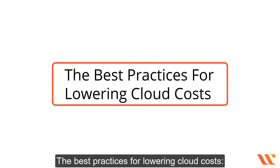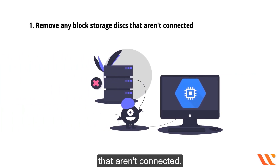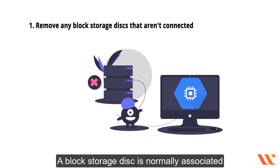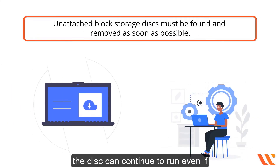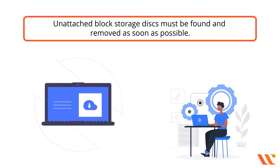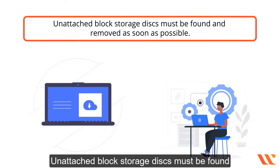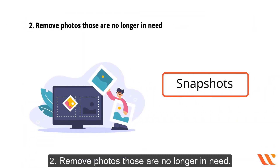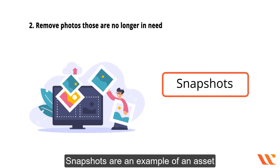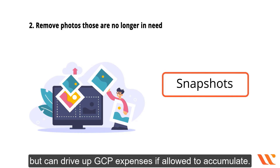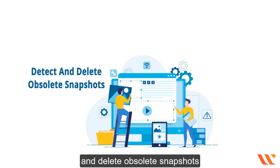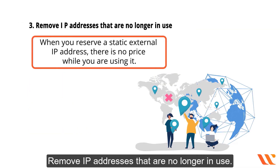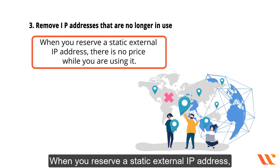Best practice one: remove any block storage disks that aren't connected. A block storage disk is normally associated with a virtual machine when launched in Google Compute Engine, but even when the VM is stopped, the disk can continue to run. Unattached block storage disks must be found and removed as soon as possible. Best practice two: detect and delete obsolete snapshots that are no longer useful, as accumulated snapshots can drive up GCP expenses.